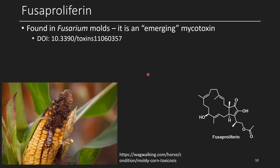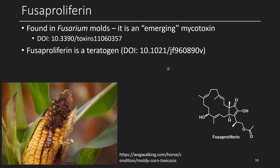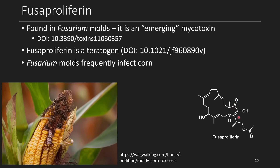The next compound is fusaproliferin, also found in Fusarium molds, and it's an emerging mycotoxin discovered more recently. It's known to be a teratogen and is toxic in general, though all its modes of toxicity aren't fully understood. Structurally, it has a large ring system — not a macrolactone but a macrocycle with several olefins and a cyclopropenone motif, which is interesting. It also has a hydroxy group, and the ester is presumably a prodrug that gets cleaved to interact with some portion of the cell.